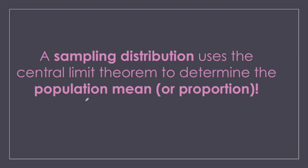So we're going to look at sampling distributions — these are when we're taking samples of groups of means, and we can look at the population mean or population proportion. As a refresher, this is when our standard deviation changes and we represent it with an S. Our standard deviation for population means becomes sigma over the square root of n. My standard deviation gets smaller as my sample size gets bigger.